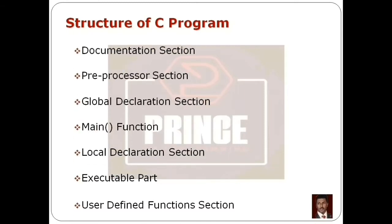The C program structure includes: the Documentation Section, Preprocessor Section, Global Declaration Section, Main Function, Local Declaration Section, Executable Part, and finally the User Defined Function Section.